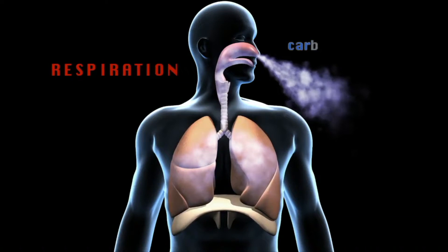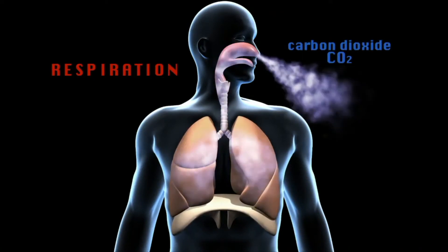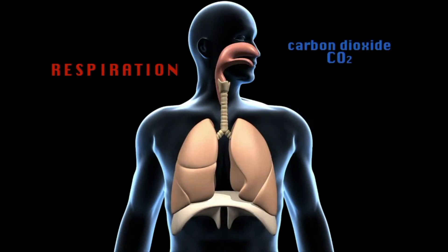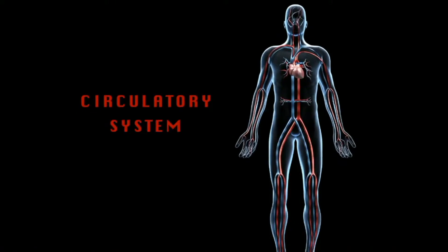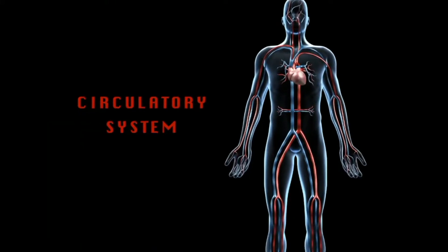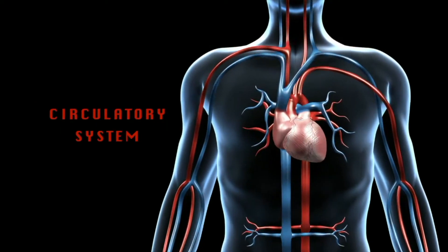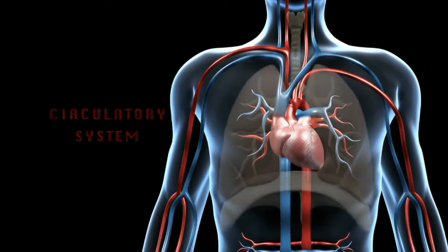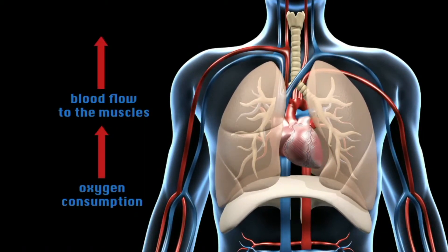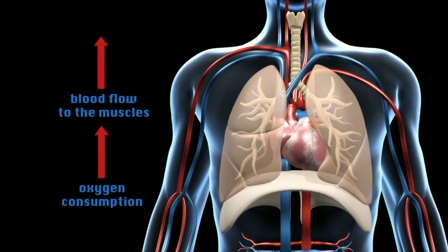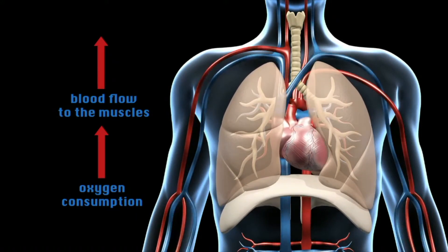More carbon dioxide is produced as a waste product of respiration. To ensure oxygen and CO2 in the blood are properly distributed, the circulatory system increases blood flow by elevating heart rate and stroke volume. The blood flow to the muscles increases in direct proportion to the increase in oxygen consumption — one increase feeds the other to meet the demand of the activity.